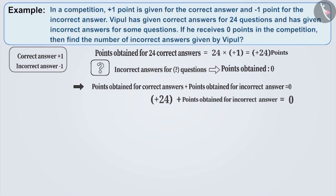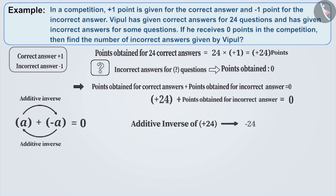Let me tell you. Addition of any two integers is 0 when both the integers are additive inverse of each other. Additive inverse of plus 24 can be obtained by changing its sign, which will be minus 24.